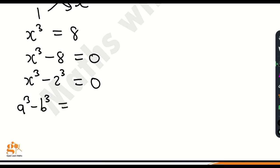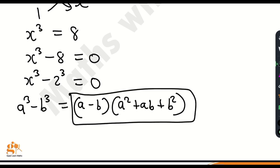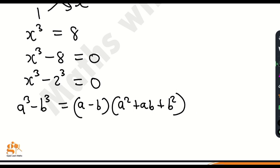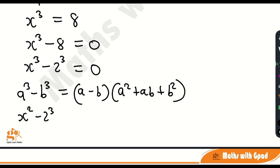From algebraic identities, if you have a cubed minus b cubed, this can be factorized to (a minus b) times (a squared plus ab plus b squared). If you expand this it will simplify back to a cubed minus b cubed. That's what I'm going to do with x cubed minus 2 cubed.